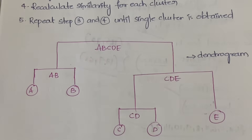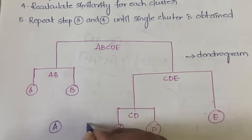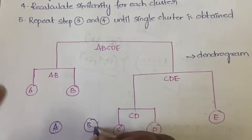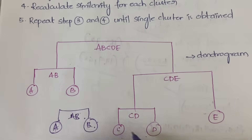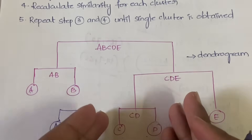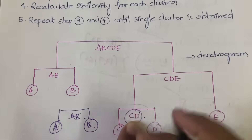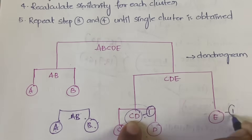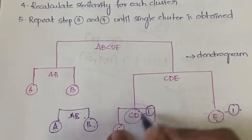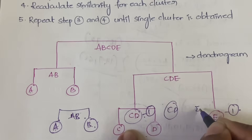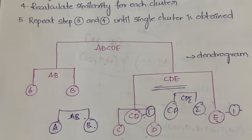For example, in the dendrogram: initially a and b are separate — you calculate similarity between a and b, and if it is high you merge them into cluster AB. Similarly, c and d are separate; you calculate similarity and merge them into cluster CD. Then cluster CD and e are compared; if similar, you merge them into CDE. So the direction goes from the bottom to the top.